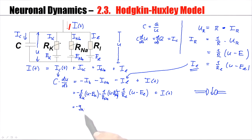1 over RK equals GK. I copy the U minus EK, but I leave a little bit of space in here. Because the channel may not always be open. The channel can also be closed. The conductance in that case is very, very different. Hodgkin and Huxley introduced a gating variable that describes the state of the gate.